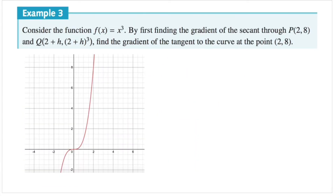Here's an example. Consider the function f(x) = x³. By first finding the gradient of the secant through P(2, 8) and point Q, find the gradient of the tangent to the curve at the point (2, 8). So we want to find the tangent at point P, since (2, 8) is the coordinate for P. I've sketched the graph — it's a cubic function. Point P is at (2, 8), so the x value is 2 and the corresponding y value is 8.